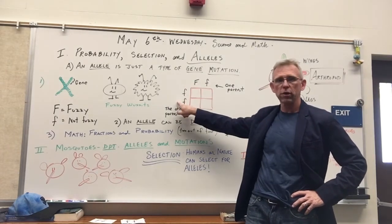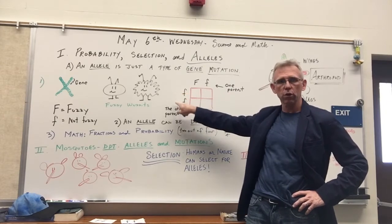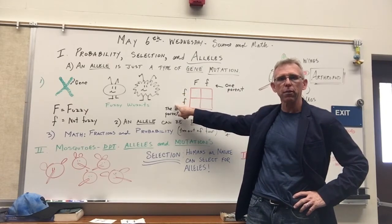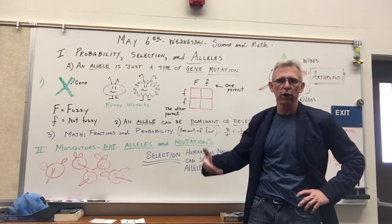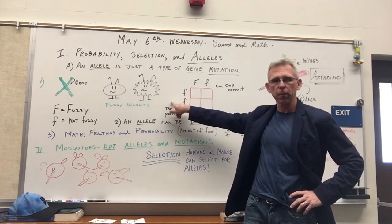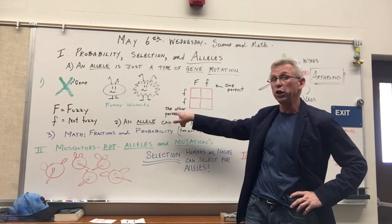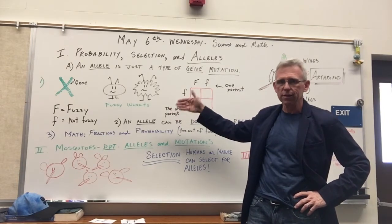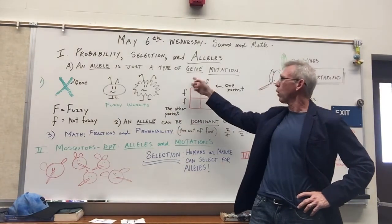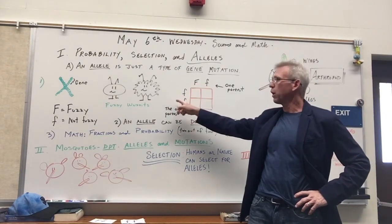This one, not. Lowercase f, lowercase f. You'll notice that both are recessive. There is no dominant gene in that genotype. There is no dominant gene in the genome here. So this parent, whether it's the mother or the father, is not going to be fuzzy. So you've got one fuzzy one, one not fuzzy one.